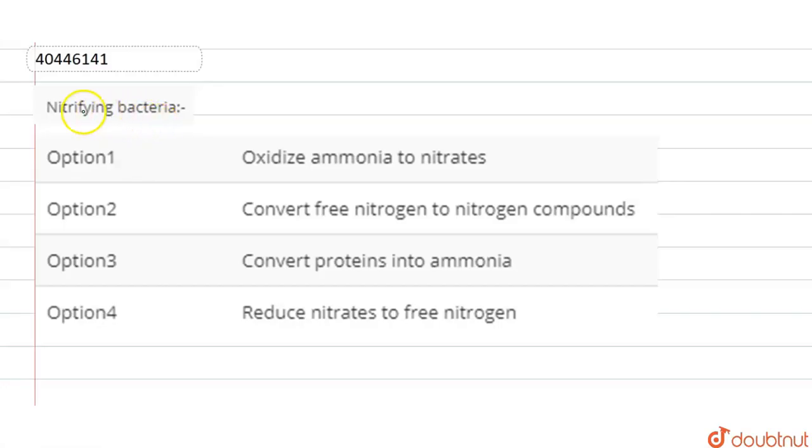So the question is: nitrifying bacteria - option 1, oxidize ammonia to nitrates; option 2, convert free nitrogen to nitrogen compounds; option 3, convert proteins into ammonia; and option 4, reduce nitrates to free nitrogen.